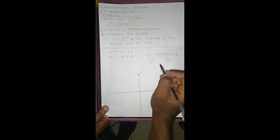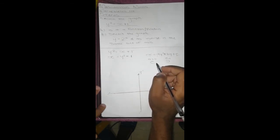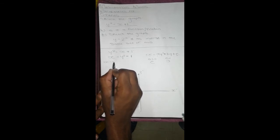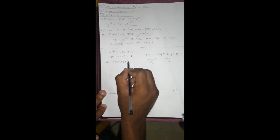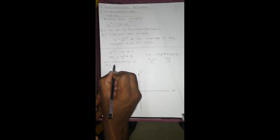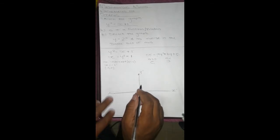This is going to be our x-intercept. Our x-intercept where y equals 0: x equals negative 1. So it's going to be negative 1 and 0.